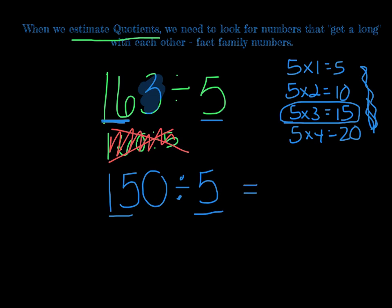15 divided by 5 is 3, we figured that up here before, and then we're just going to add our 0. So if we were to estimate the quotient, the quotient with this problem 163 divided by 5 would be about 30.